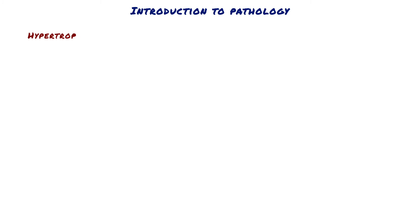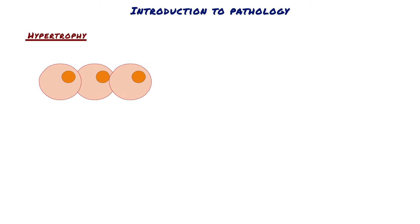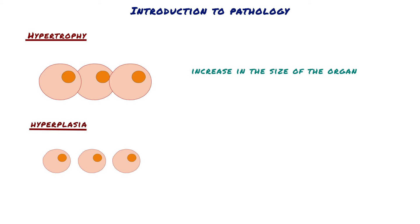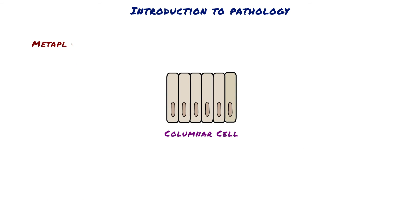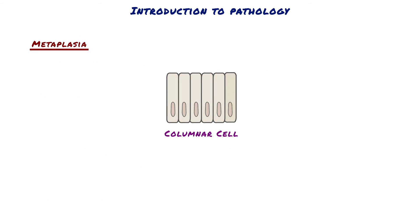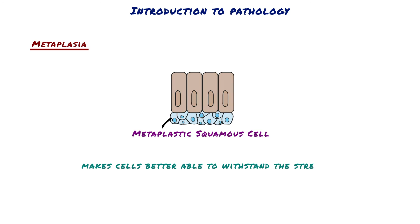Hypertrophy is an increase in the size of cells, resulting in an increase in the size of an organ. In contrast, hyperplasia is an increase in cell number. Metaplasia is a change in phenotype of differentiated cells, often in response to chronic irritation, that makes cells better able to withstand stress.